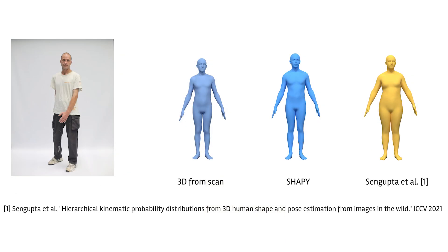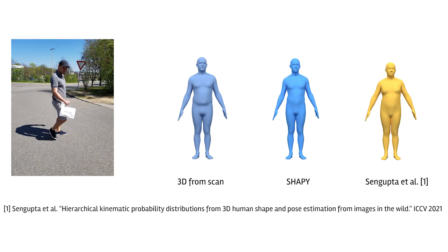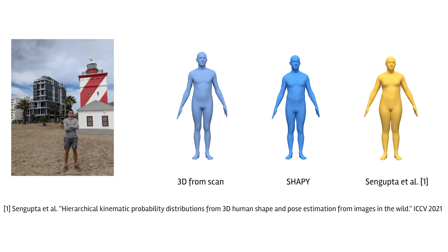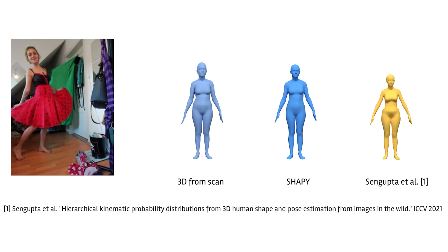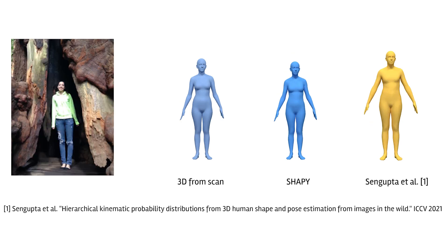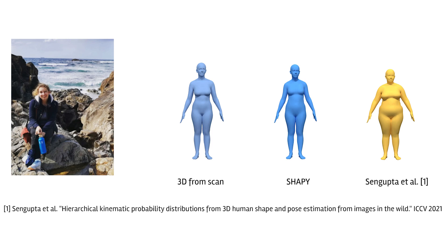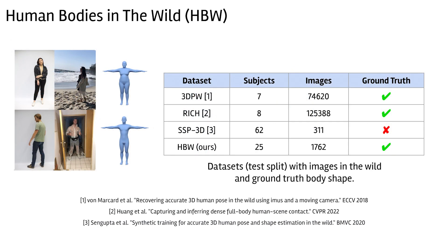Here are some qualitative examples. Note how ShapeY precisely captures subtle changes in body shape and, compared to prior art, is less confused by clothing. To quantitatively evaluate ShapeY, we capture a new dataset because existing benchmarks either have few subjects or no ground truth body shape. Our Human Bodies in the Wild dataset consists of ground truth 3D scans of 25 subjects and images taken in the wild and in the lab.